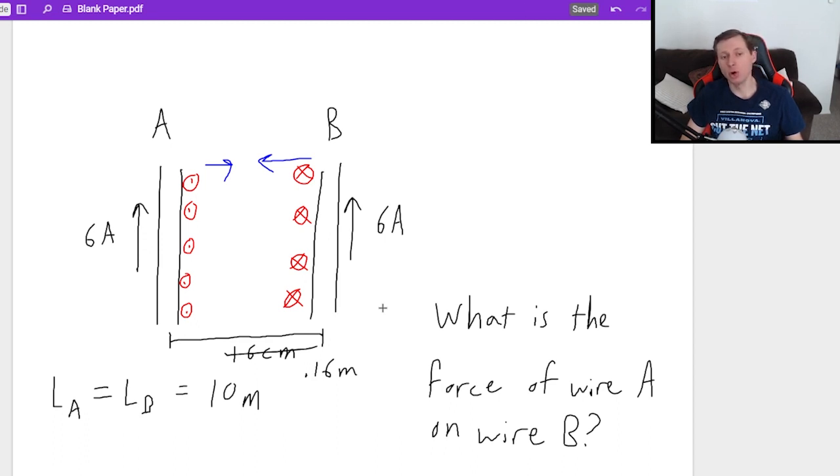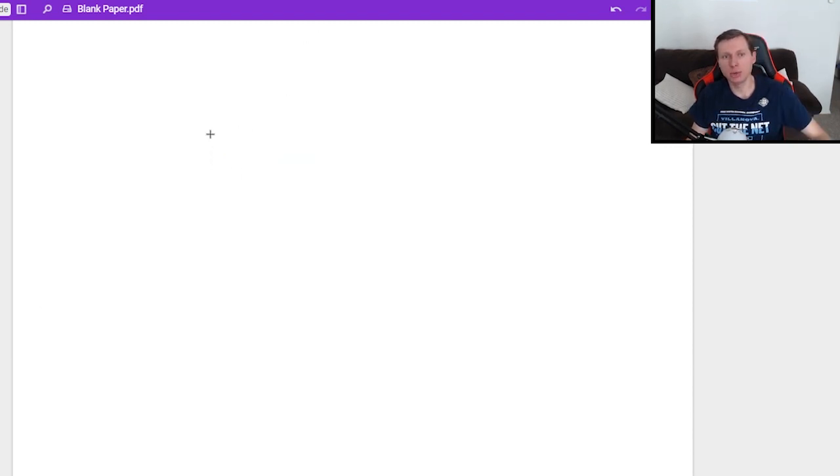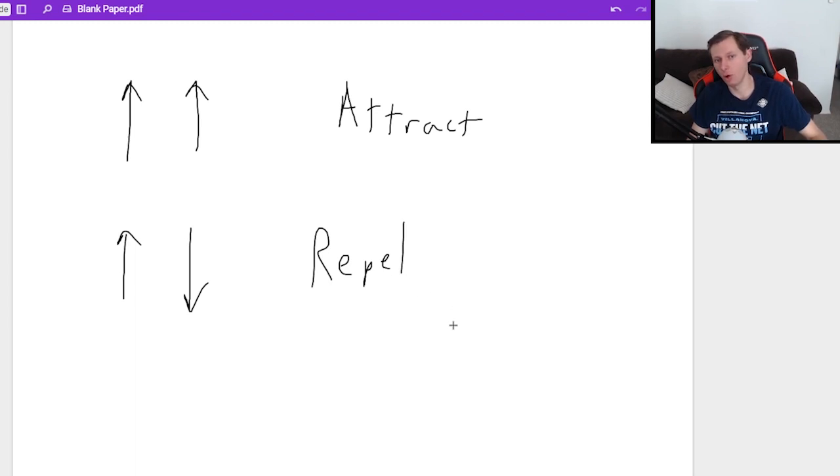And by the way, the wires will always attract as long as the currents go in the same direction. So in other words, the conclusion that I want you to draw is that if you have two wires and you have currents in the same direction, then they are going to attract always. If you have wires with currents pointing in opposite directions, I'm just going to tell you these will repel always, and you can prove that yourself if you'd like.